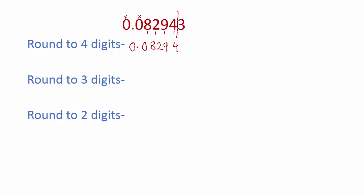Keep in mind: we turn other digits to zero only before the decimal, not after the decimal. So here we will just drop the three. The same way, rounding to three digits — one, two, three — that means up to nine. Four is again four or less, so we leave nine as it is. It will become 0.00829 zero point zero.